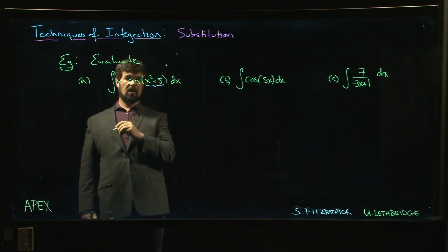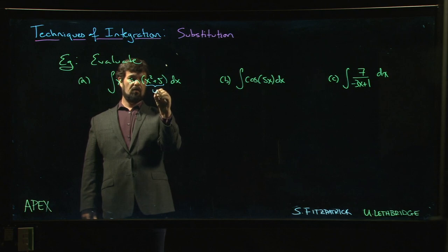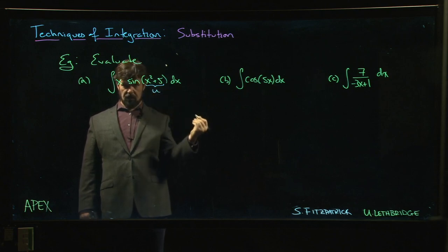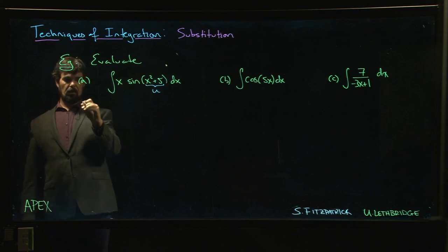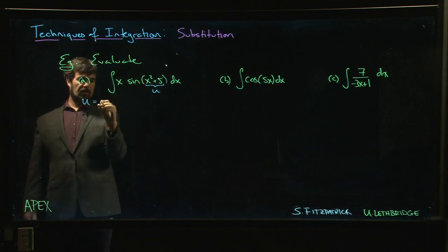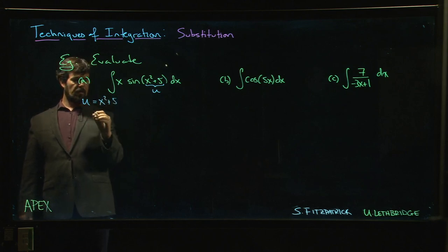Here we see that we have something inside the sine function, so that's your obvious candidate for your u. Once you've made a guess at what u should be, you come down and say okay, I'm going to take u as x squared plus five. Then we find du.